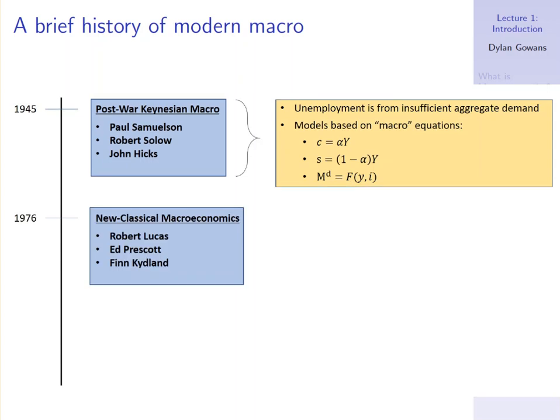In 1976 — again an arbitrary date, but around this time — we have the birth of what's known as new classical macroeconomics. A few names here: Robert Lucas, we're going to talk about him in a second, Ed Prescott, Finn Kydland. They really turned those two assumptions or features of post-war Keynesian macro on their head, essentially saying the opposite on both counts.